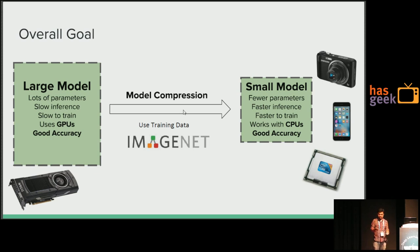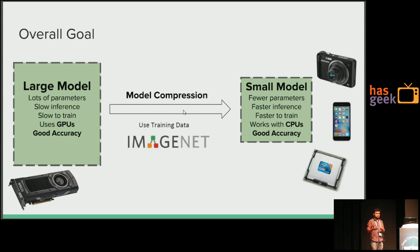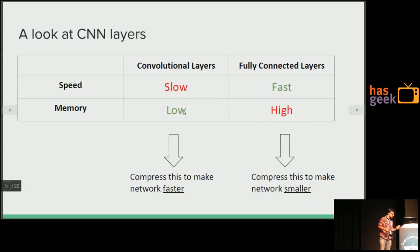Ideally it should not lose any accuracy. When converting from a large model to a small model, we use training data — it's not a one-shot process. Typically you fine-tune the large model such that it becomes smaller. In terms of optimization, you optimize the large model with the constraint that the resulting model must be much smaller than the original. So model compression is just making a model smaller.